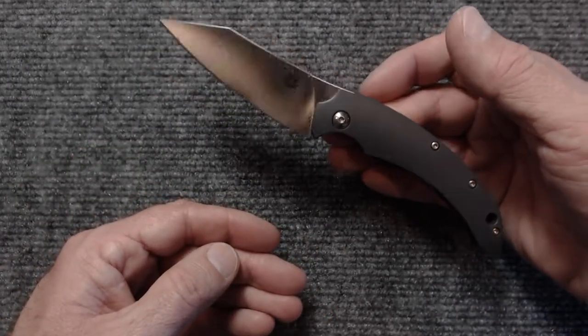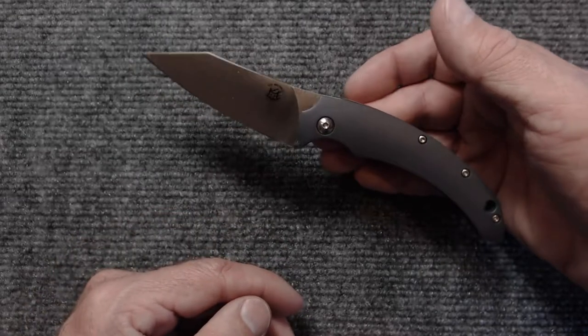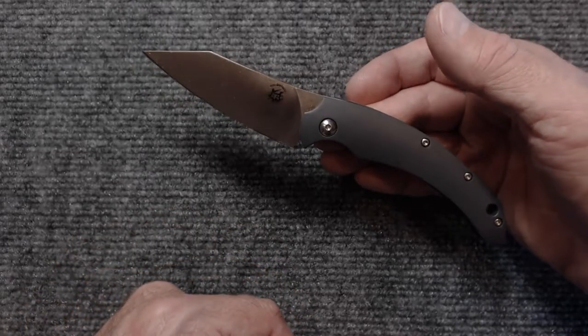The scales are FRN, they're not very heavy, and as you can see it balances right behind the pivot in that little finger choil there.